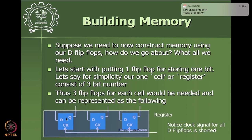One D flip-flop holds one bit of memory. If we put together three flip-flops, all having the same clock signal, they form a three-bit register. We have three one-bit storage elements all controlled by a single clock input to store some value.